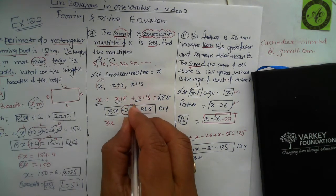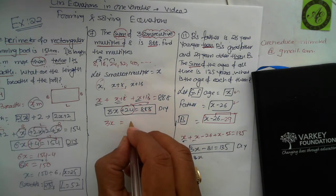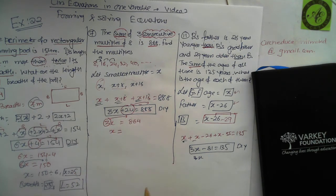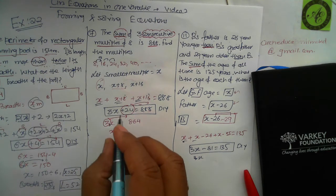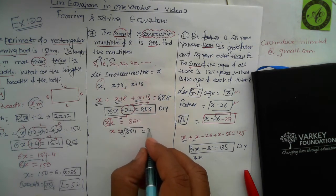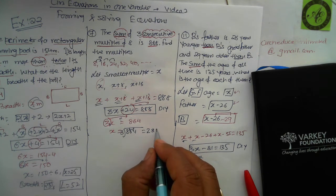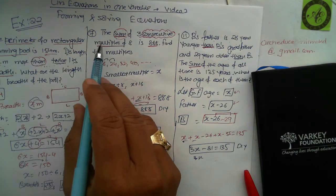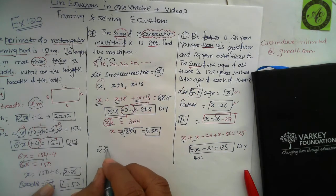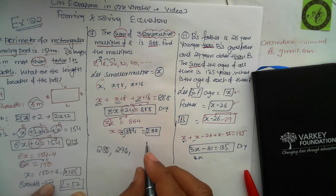Solving question 7: 3x + 24 = 888, so 3x = 888 − 24 = 864. Dividing by 3: x = 864 ÷ 3 = 288. So the smallest multiple is 288. The next one is 288 + 8 = 296, and the third is 296 + 8 = 304. Adding them together: 288 + 296 + 304 = 888 ✓